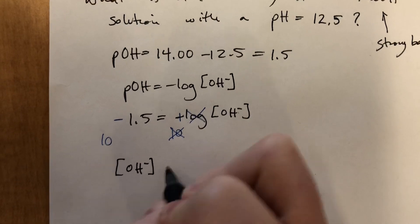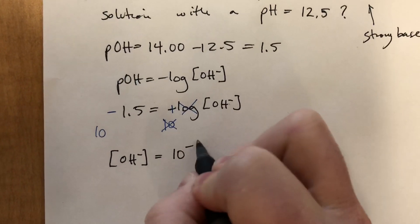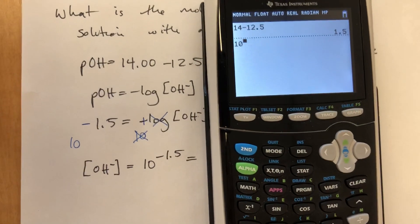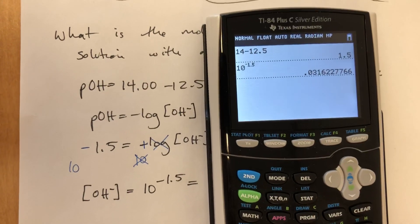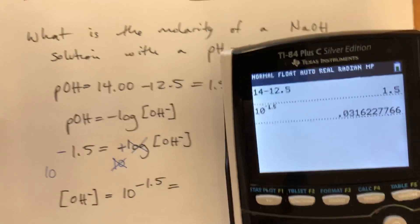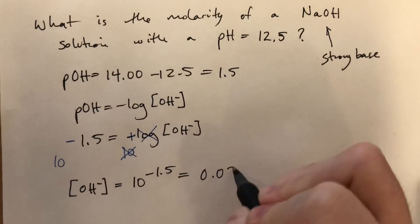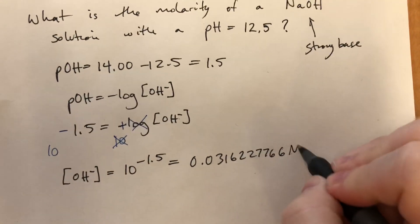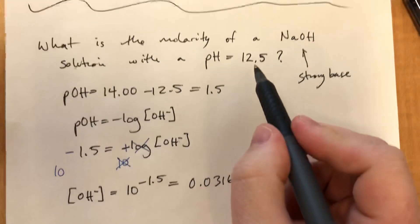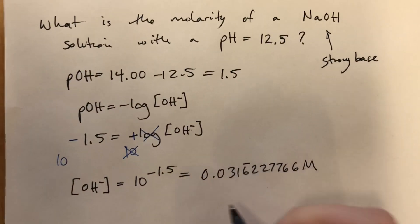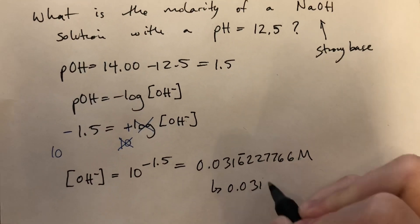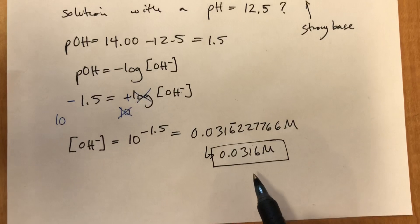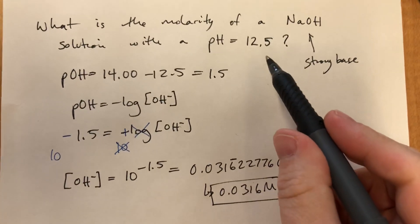Rewriting that to make it clear — we type this into our calculator: 10 raised to the negative 1.5, we get 0.0316. We don't get to keep all those digits. This had three sig figs, so our answer gets three sig figs. So 0.0316 molar is our final concentration, which seems like a fairly low concentration, but because it's a strong base, you get a fairly high pH.